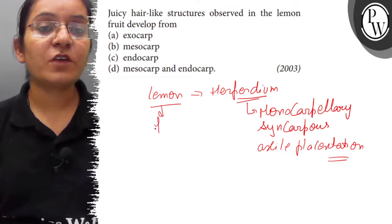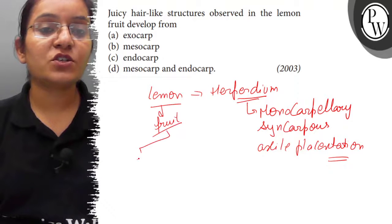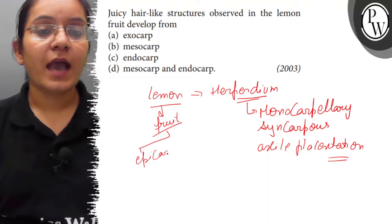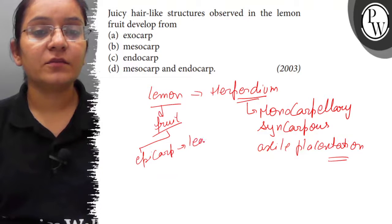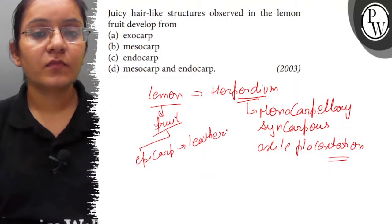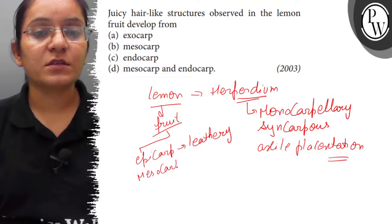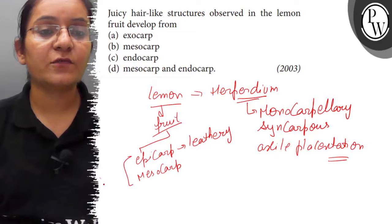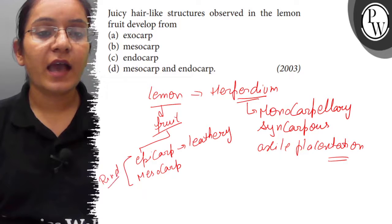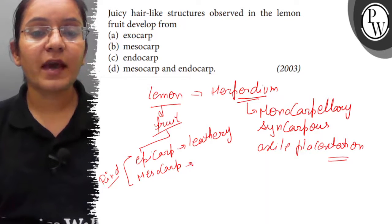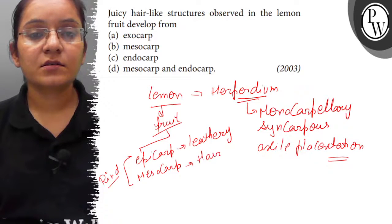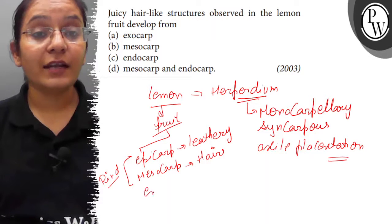In a lemon fruit layer, Epicarp becomes leathery and along with Epicarp, Mesocarp forms. Epicarp and Mesocarp together form the rind, and the Endocarp...